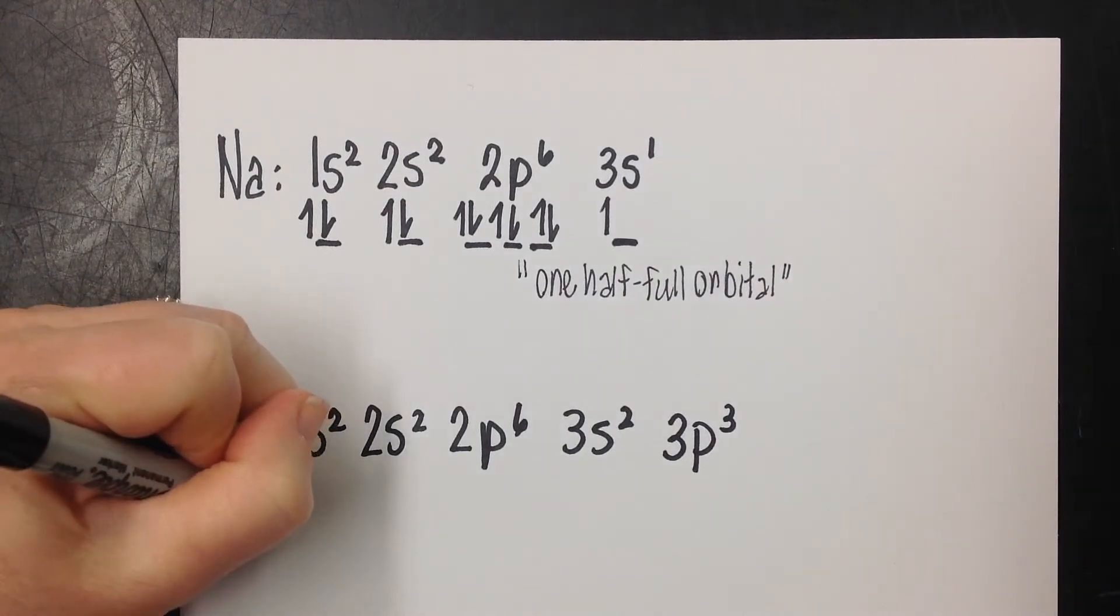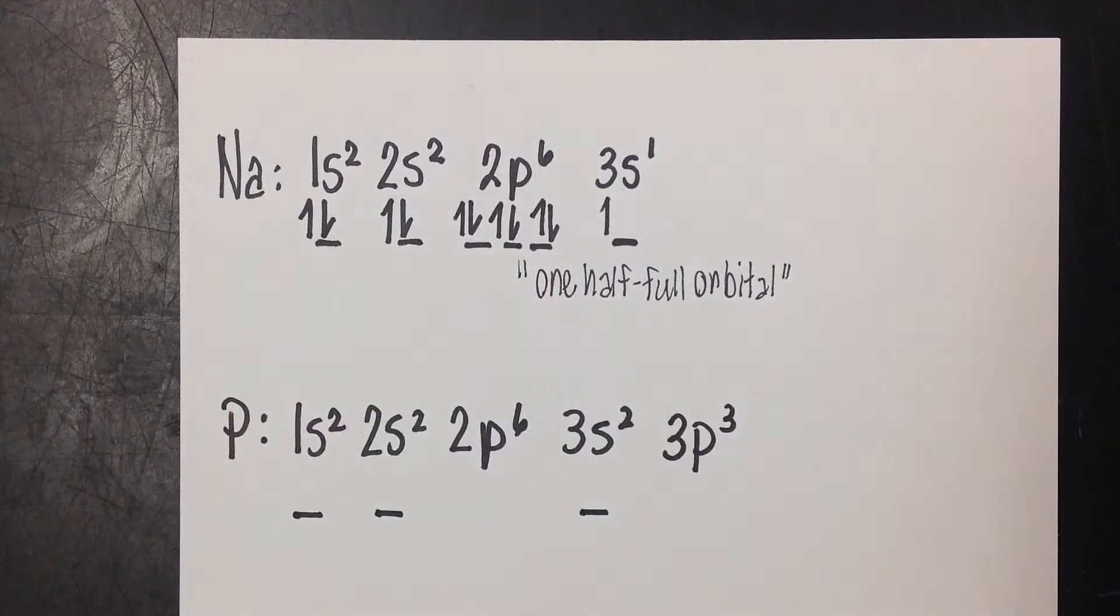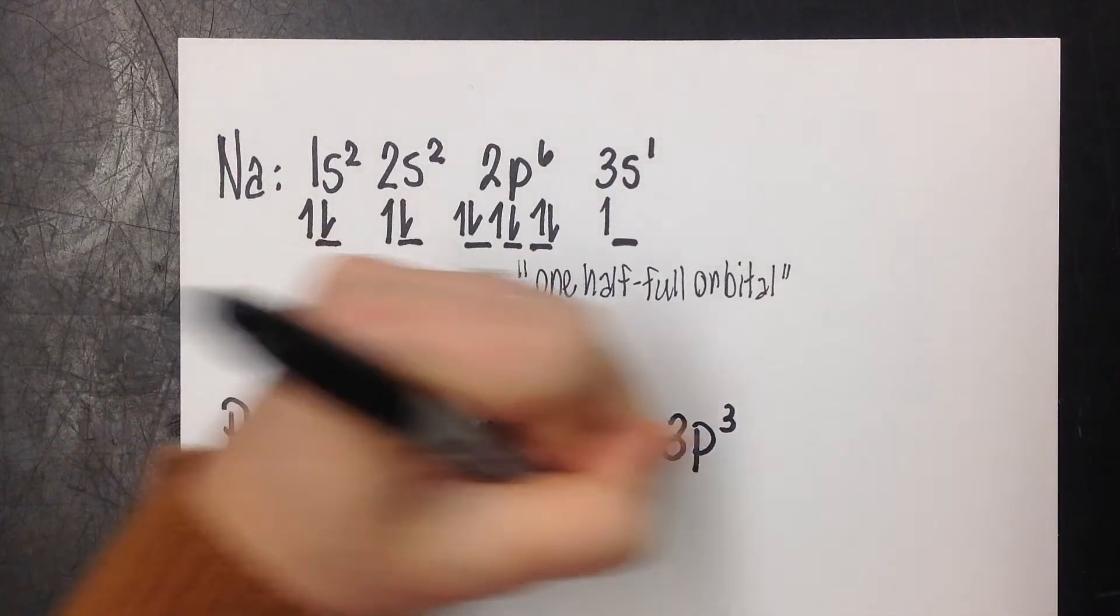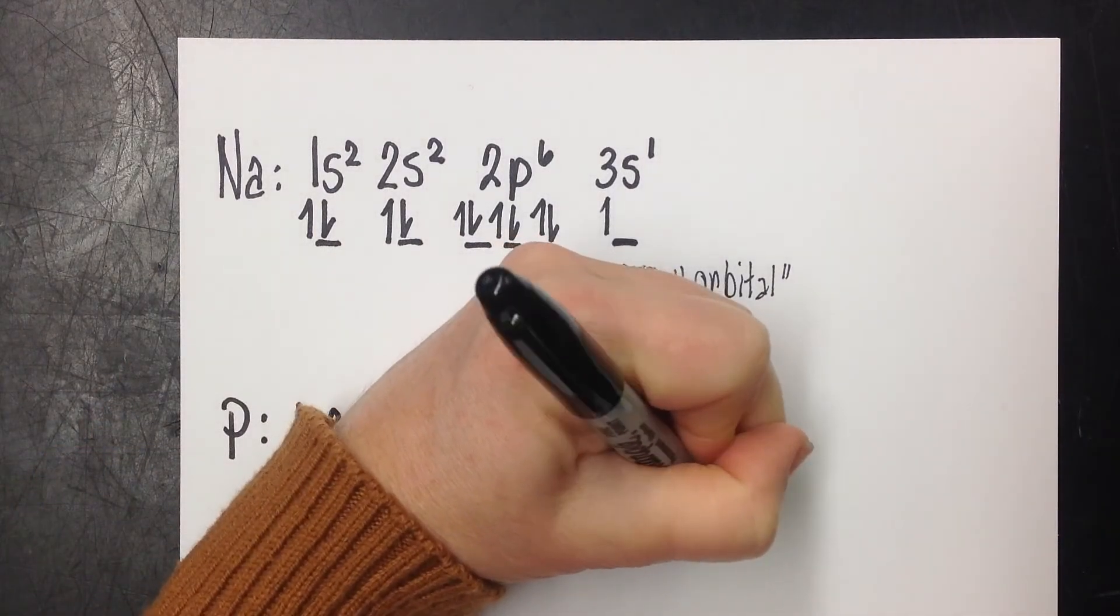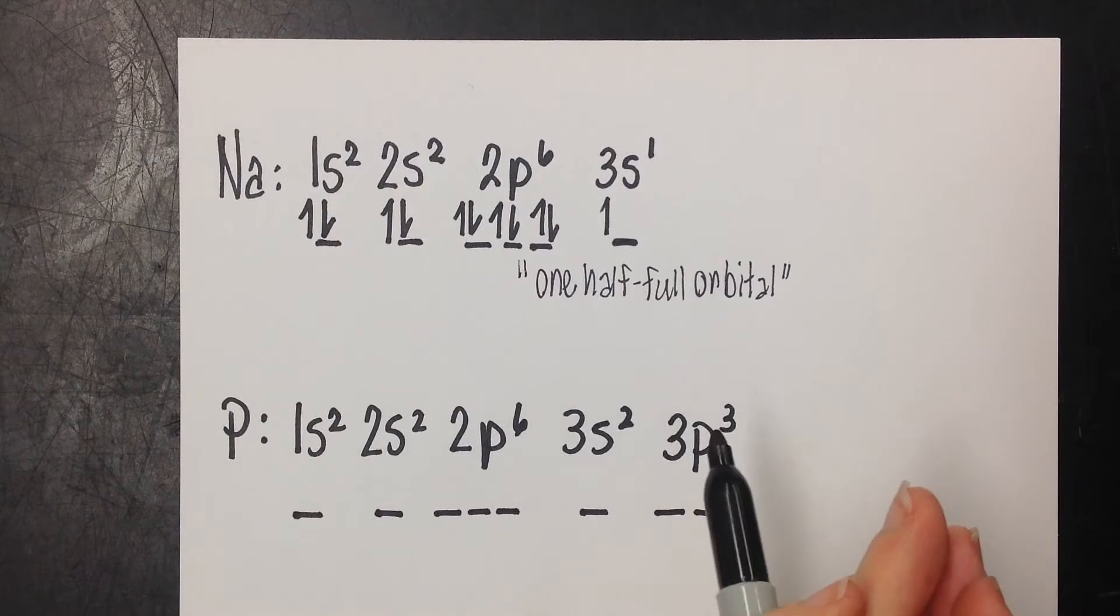Now we're ready to draw our parking spots. Remember, the s sublevel has one orbital, so we're going to mark those. And we know that the p sublevel has three orbitals. 1, 2, 3. 1, 2, 3. So now we're ready to fill in the electrons. We always start at the lowest energy level, and we work our way up. Kind of like you read a book left to right. It just makes sense.